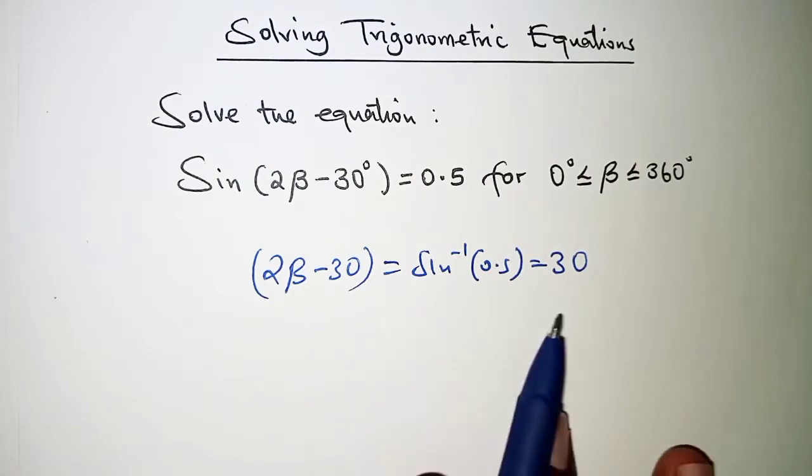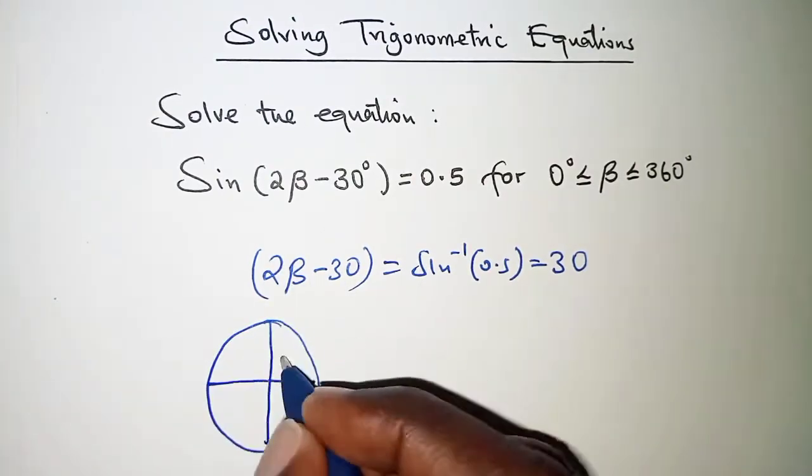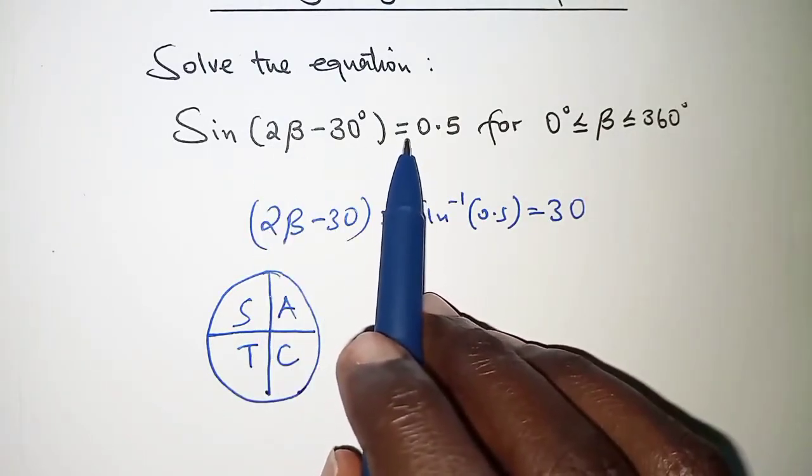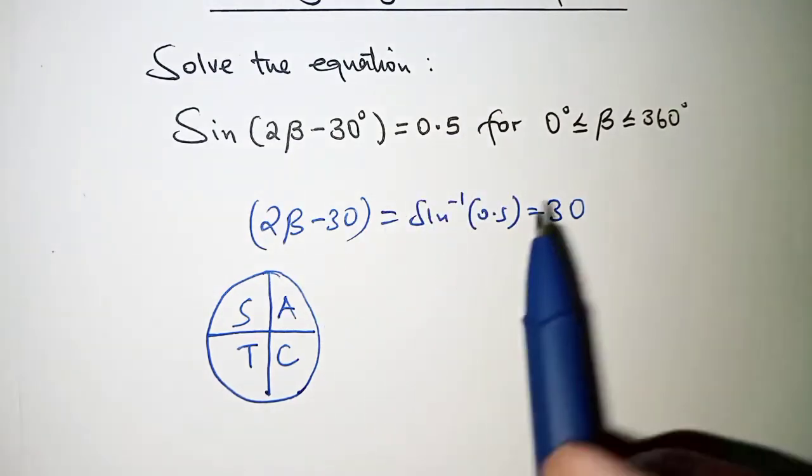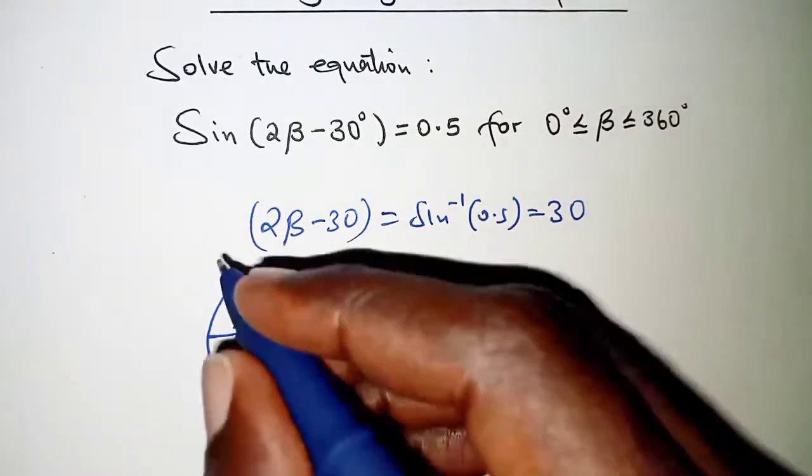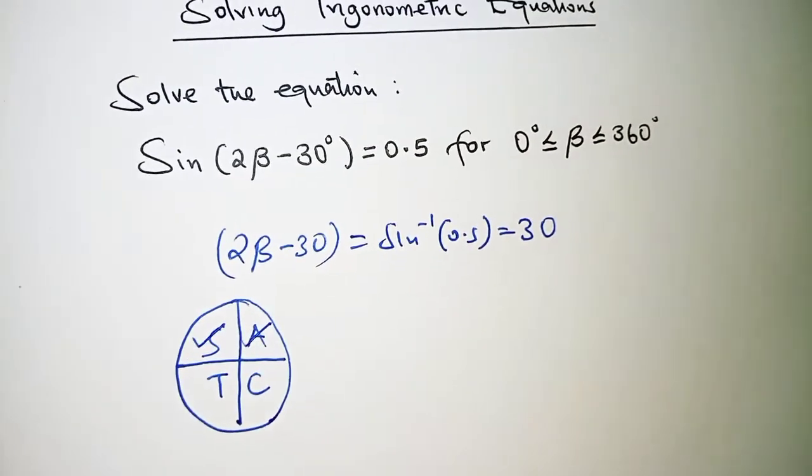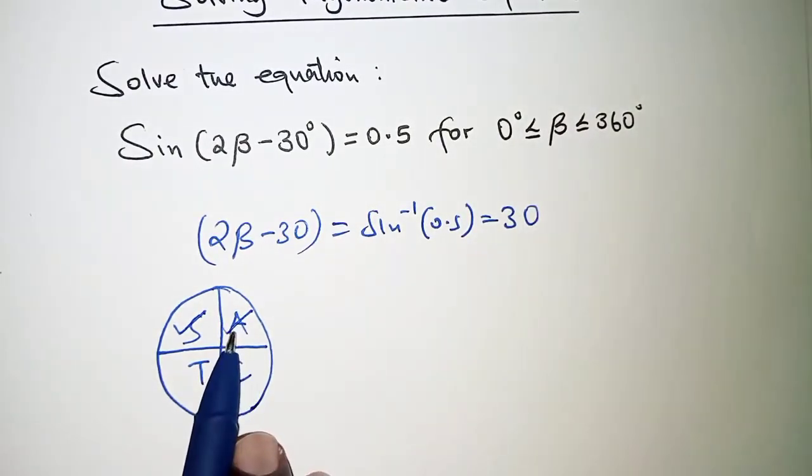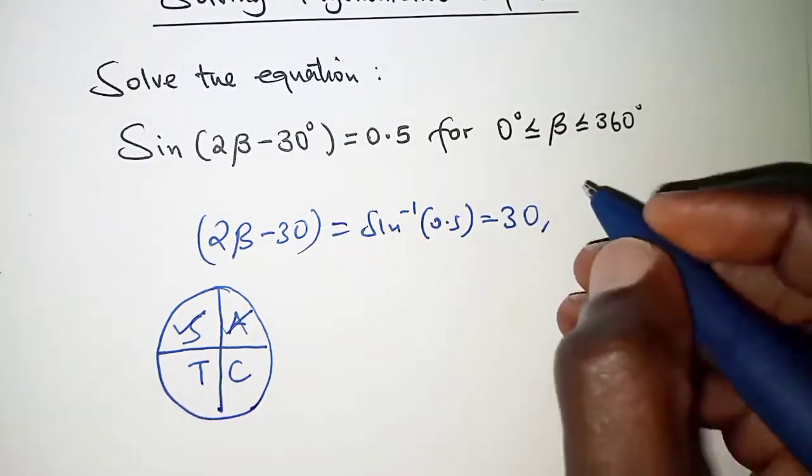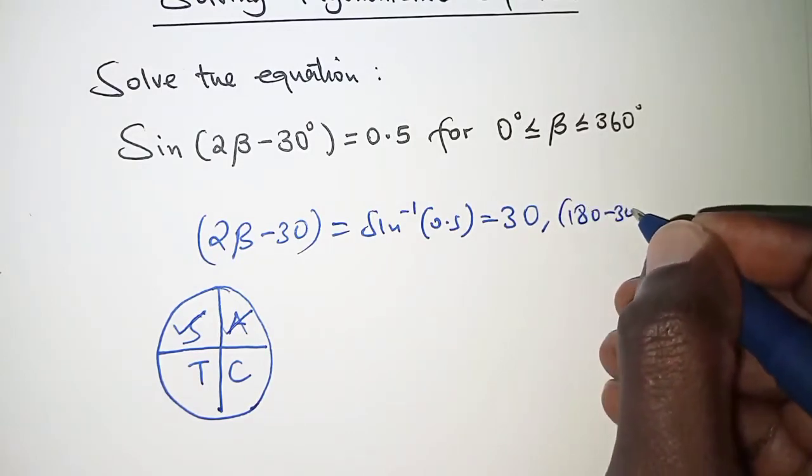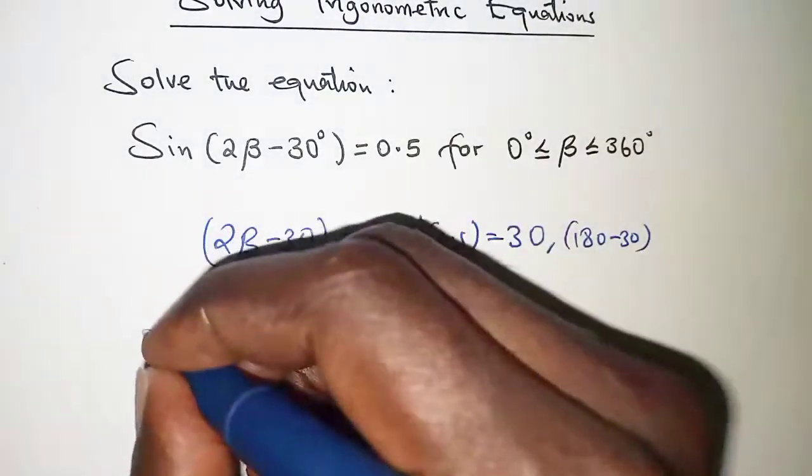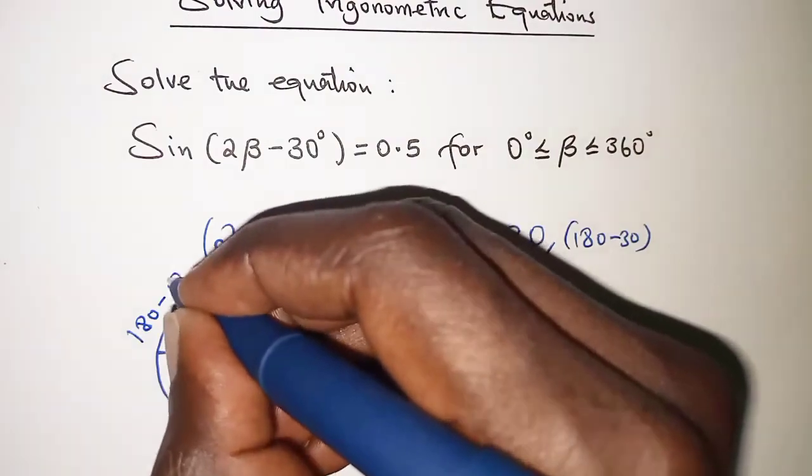Okay the next thing is to interpret using the unit circle. Originally in the equation the sine was positive, so we had positive 0.5. That means that sine is positive in the first quadrant and the second quadrant. So the first value we will consider is 30 because 30 lies in the first quadrant. And then the second value we will consider will be 180 minus 30. Because in the second quadrant we determine the angle by simply having 180 minus the acute angle theta.